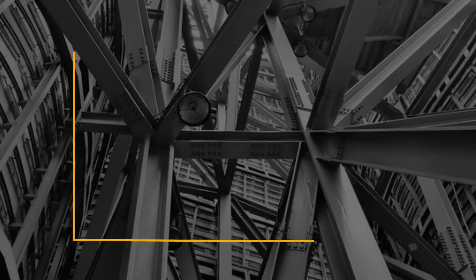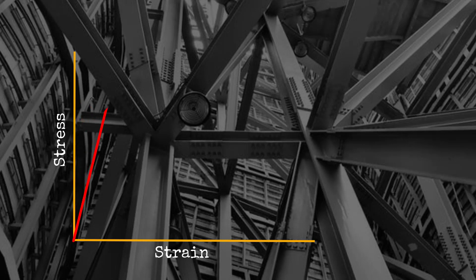These two variables can be graphed to explain both brittle and ductile deformation. If a rock is under high pressure and only experiences stress without any strain, the stress would be graphed as a vertical line, because it hasn't changed shape. Notice in this graph the line now has a slope, meaning that the rock is experiencing both stress and strain.